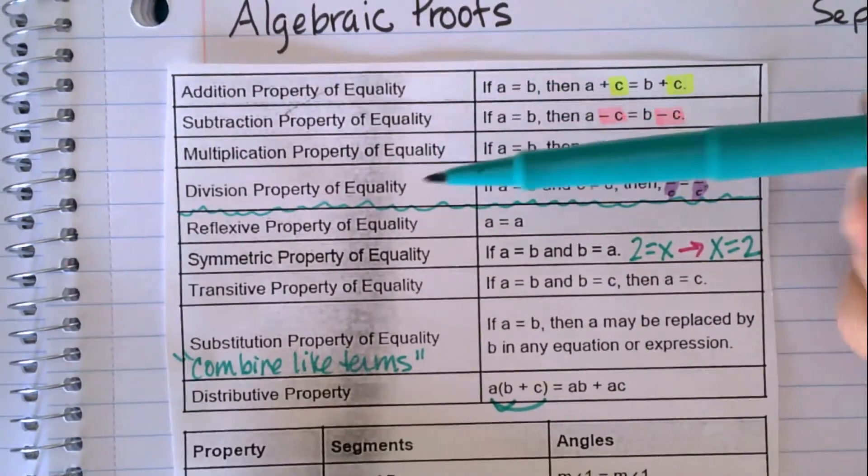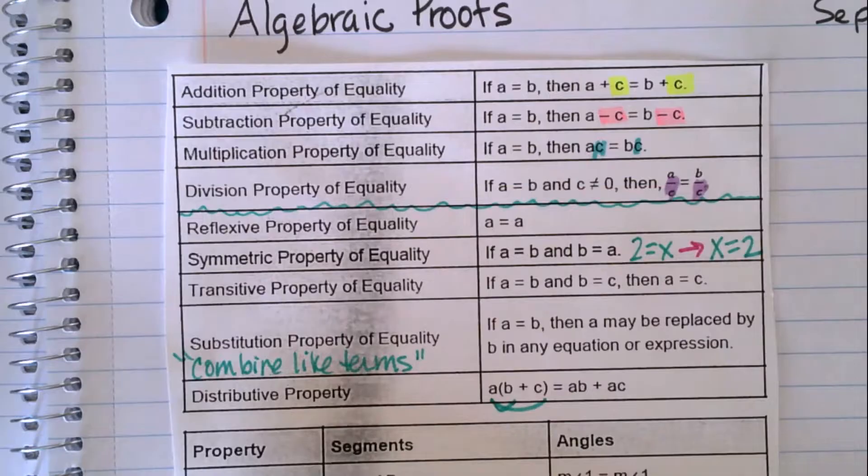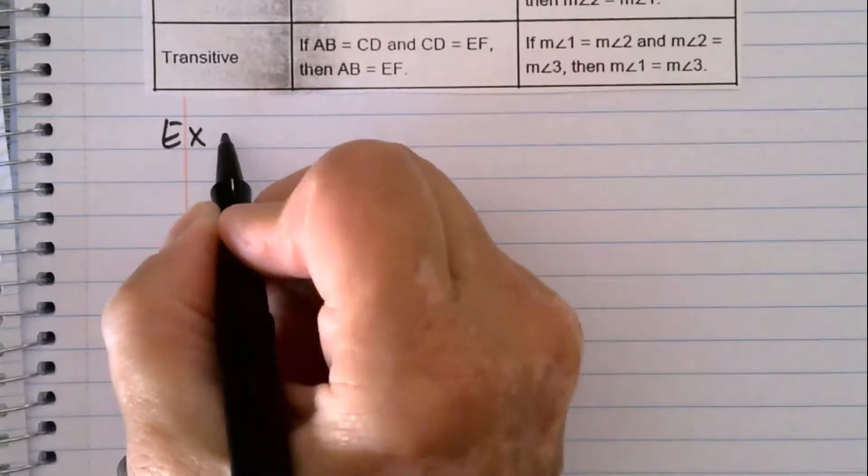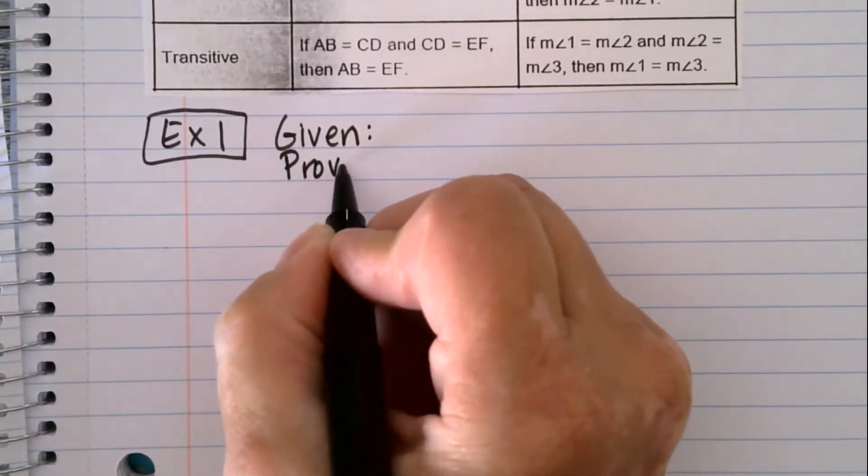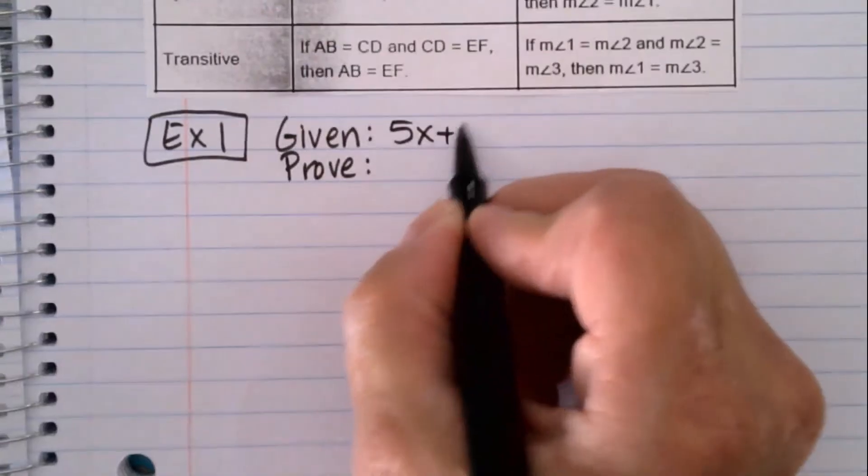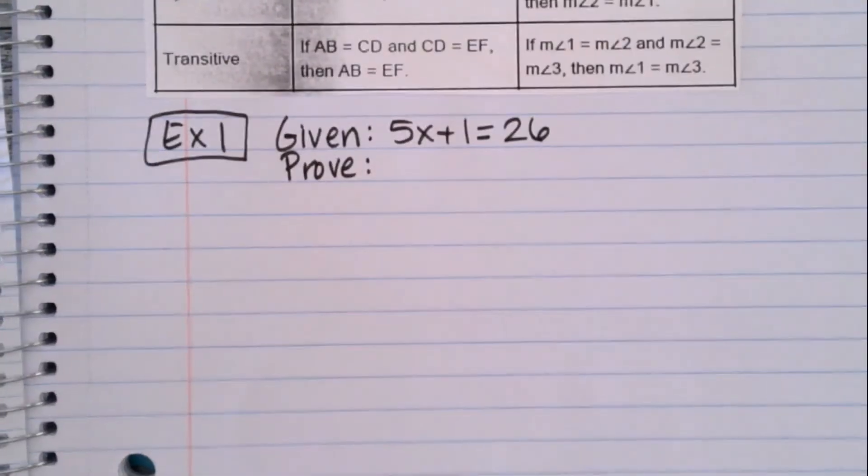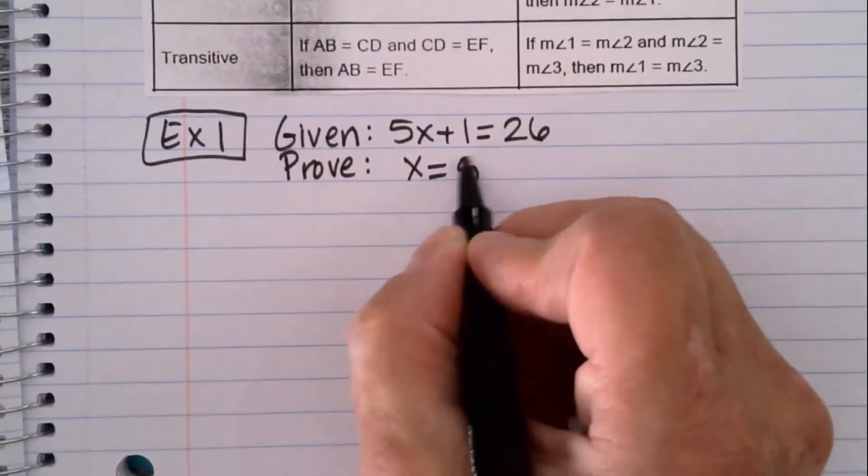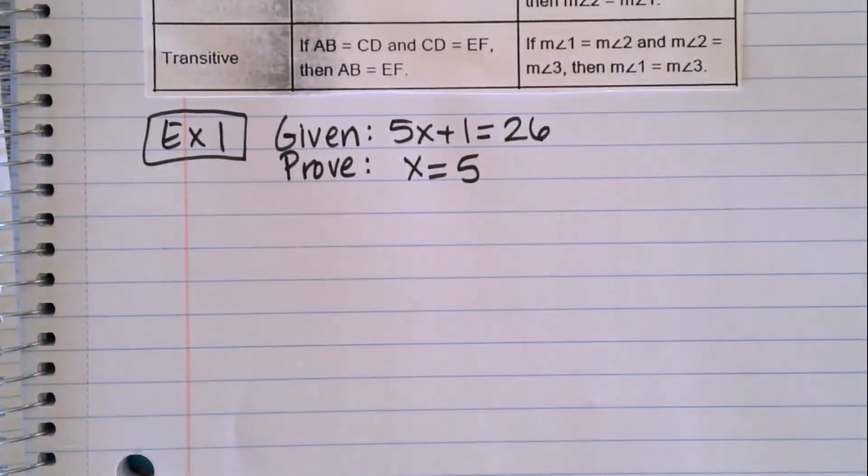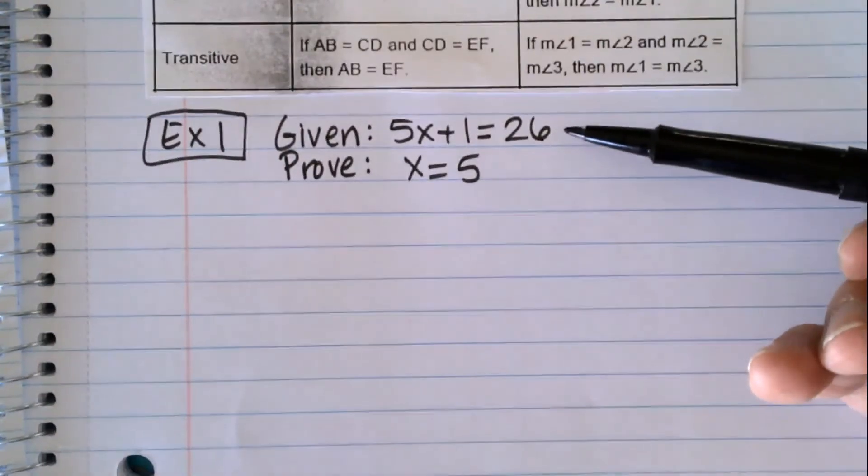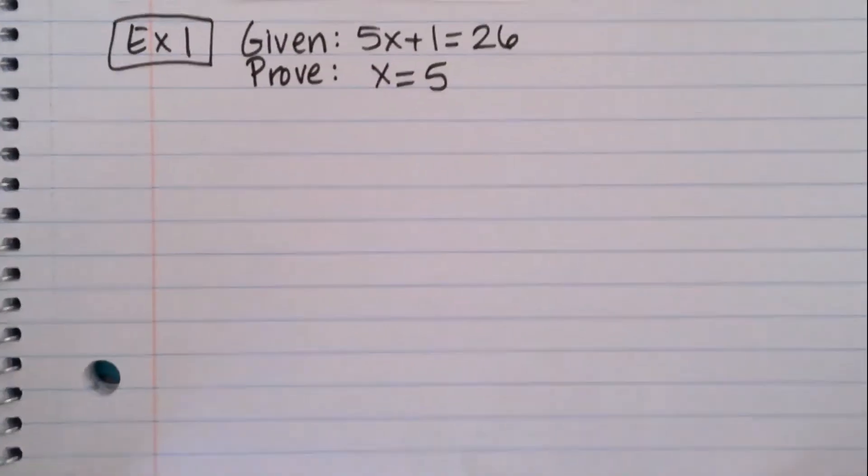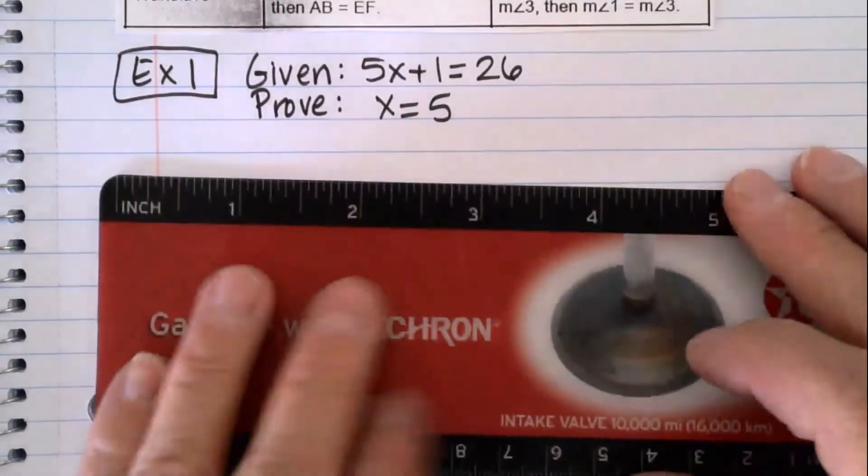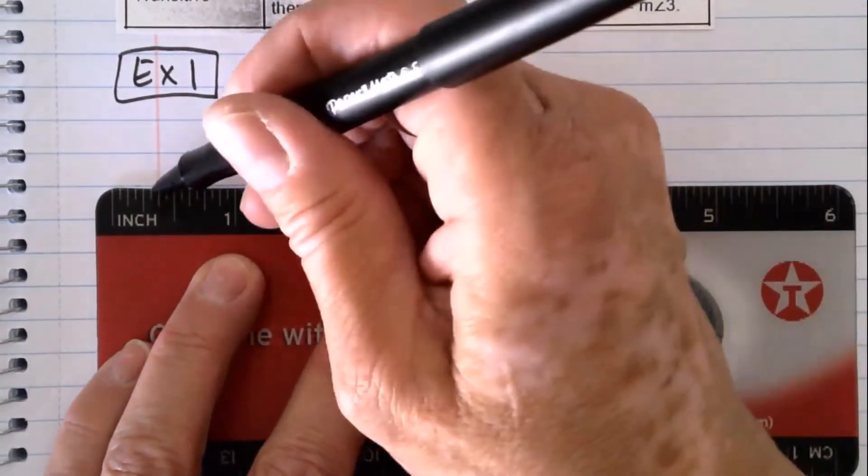And most of the ones we're going to be using are the first four because those are the ones we use to solve equations. All of these types of problems are going to be like equations that we've done before, but now we're just doing them in a different format. And the language is all really, really formal. So if given 5x + 1 = 26, we're supposed to prove that x = 5. And I'm walking you guys through this so you can kind of see how to write it.